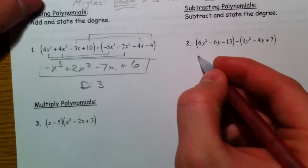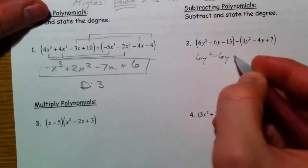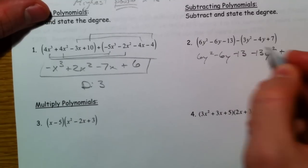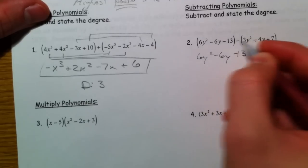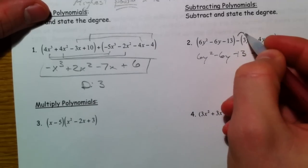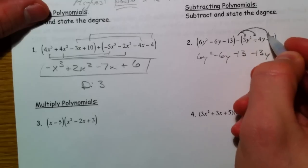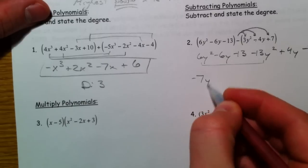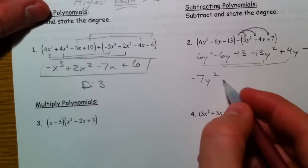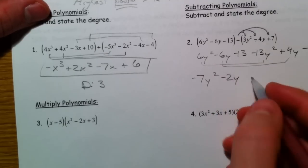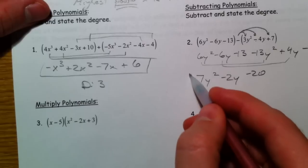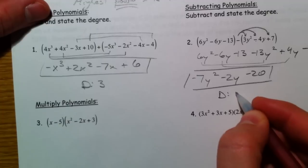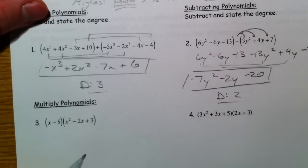So in this one, we need to subtract. And the biggest thing is that it's subtraction. And so we're subtracting 13y squared, and we're subtracting a negative 4y, and we're subtracting 7. So take this and distribute it on through. So 6 minus 13, negative 7y squared. Minus 2y. Negative 13 minus 7 is negative 20. Now you may not have like terms in every one of those. But that's what we're talking about. So the degree to this one is 2.